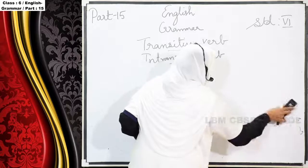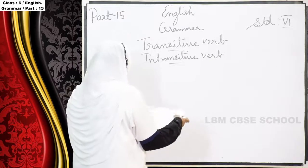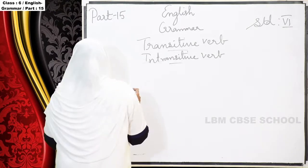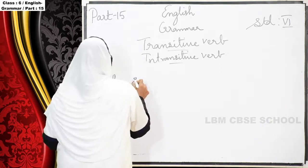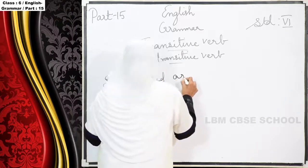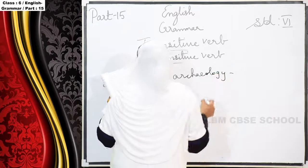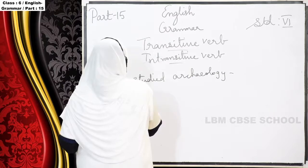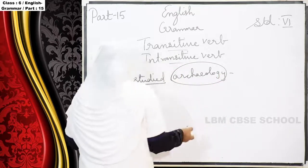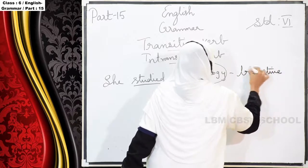Don't worry, I will send you the exercise through WhatsApp. E. 'She studied orchology.' Here 'studied' is the verb and 'orchology' is the object — what she studied. So it is passing to the object, so we call it a transitive verb.